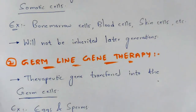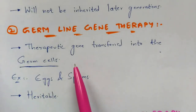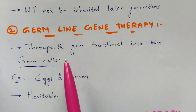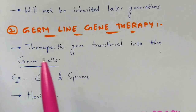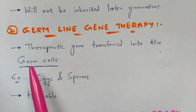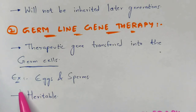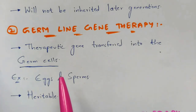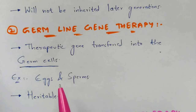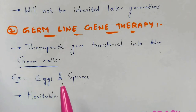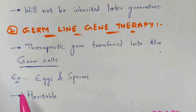In germline gene therapy, the therapeutic gene — the functioning gene that replaces the faulty gene — is transferred into germ cells. Examples of germ cells are eggs and sperms. Since we are transferring the gene directly into eggs and sperms, it is heritable, meaning the disease cannot be passed to future generations, saving offspring and their children as well.